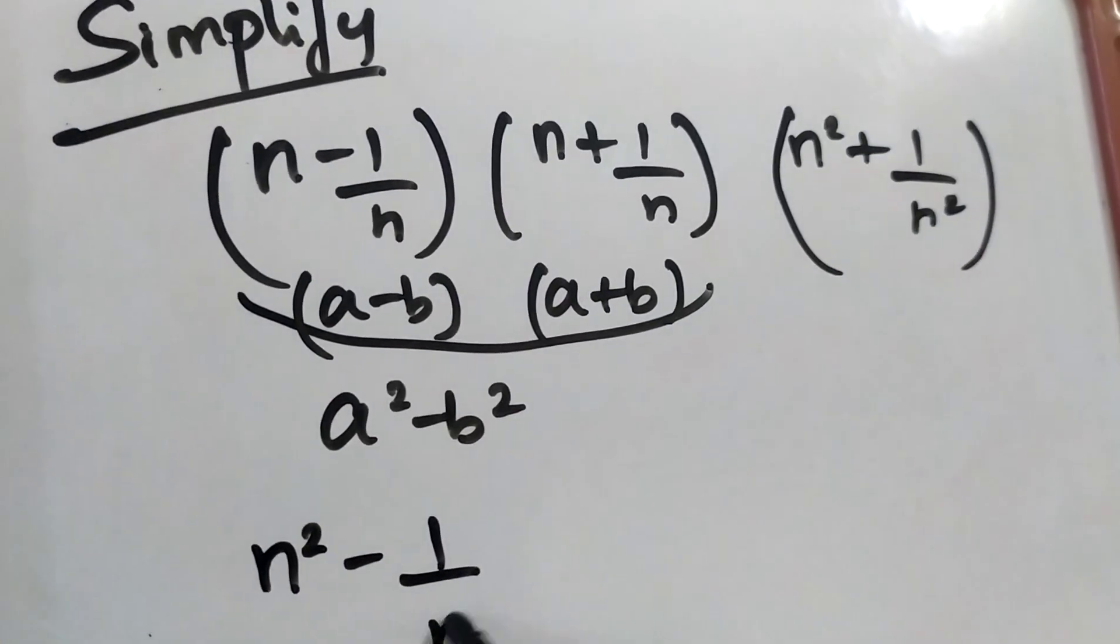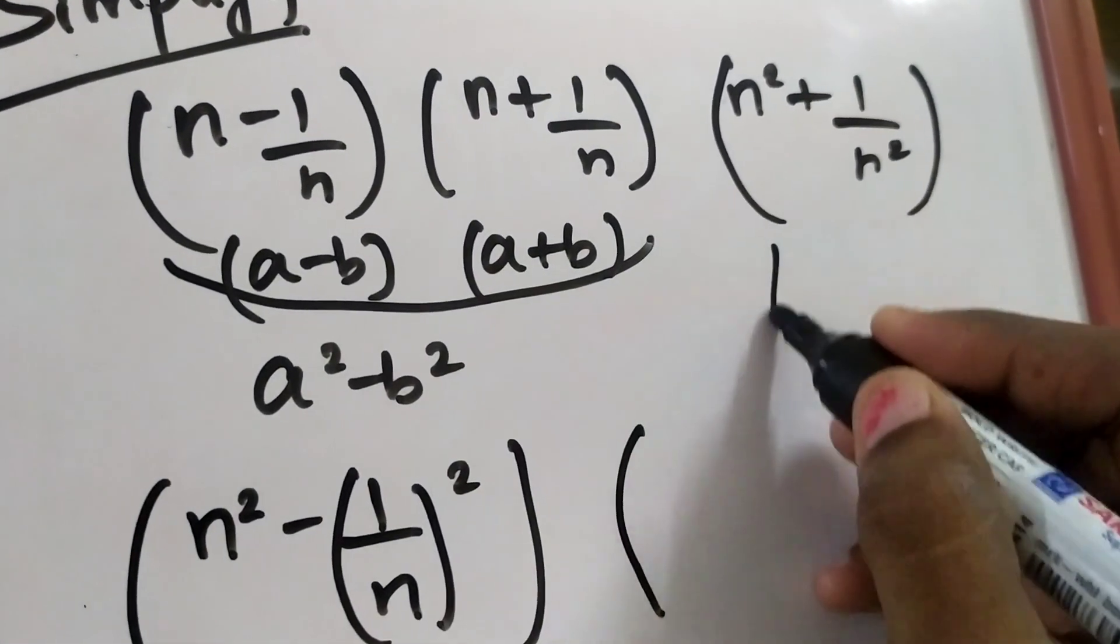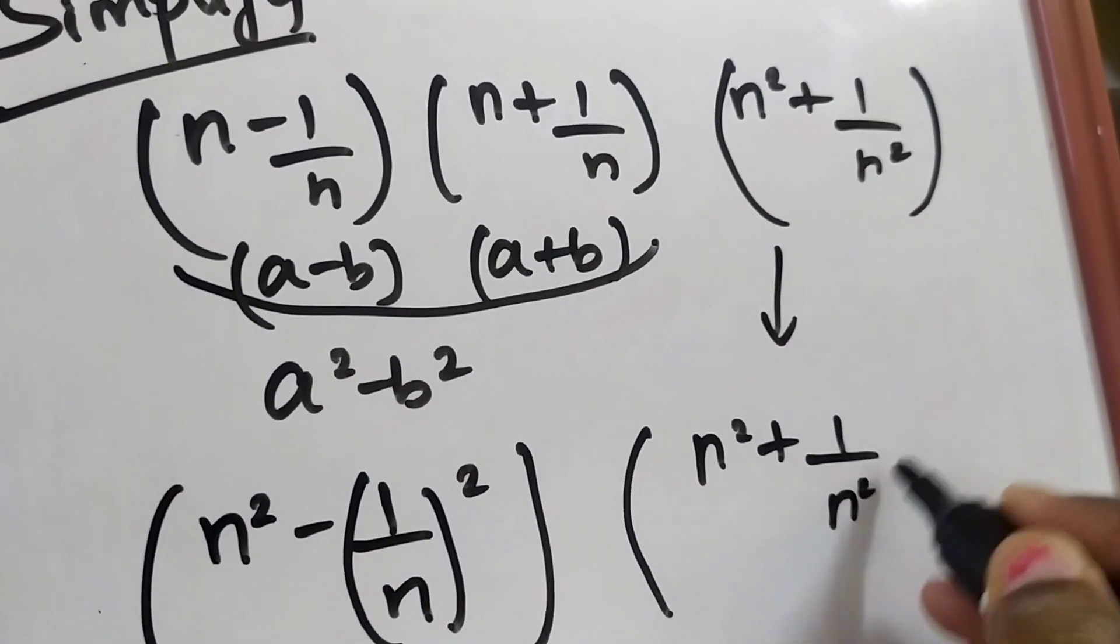It is like n square minus 1 by n, the whole squared, into this term as it is: n square plus 1 by n square.